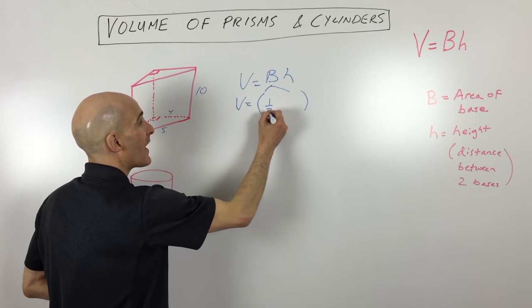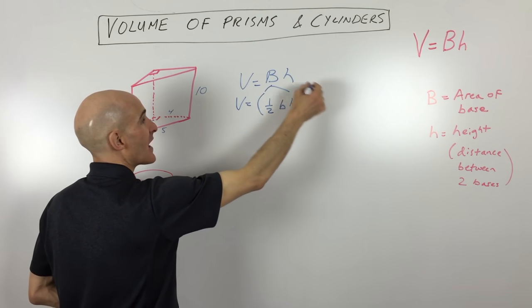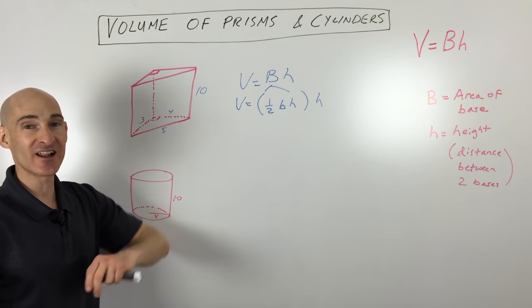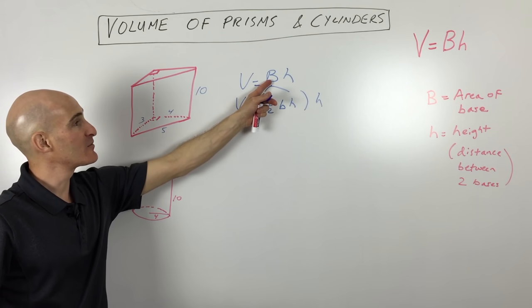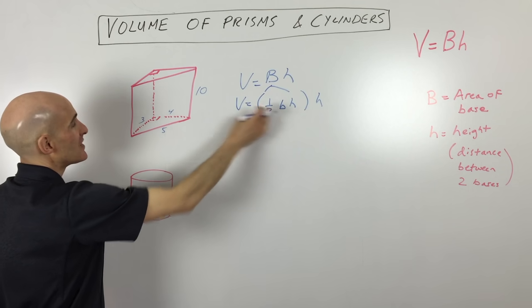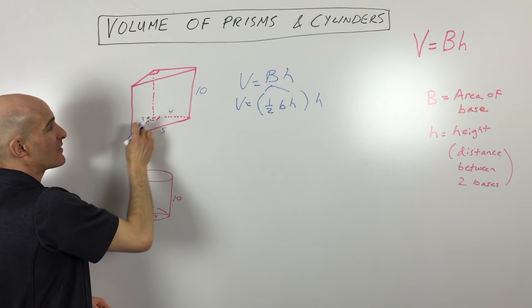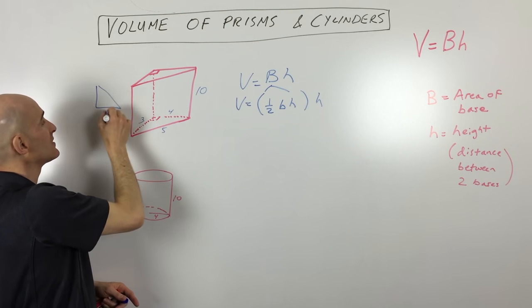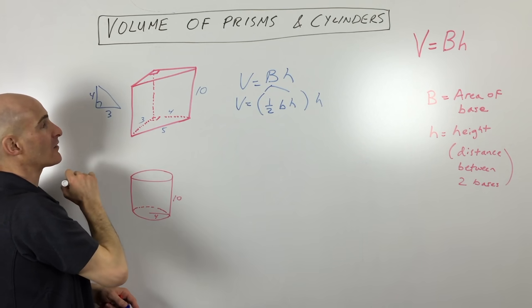It's one-half base times height, times the height again. Let's not get confused - there's a lot of B's and a lot of H's. The capital B means the area of this base, the area of this triangle. The little b means the length of the base. The base here in this triangle is either 3 or 4 - 3 could be the base and 4 could be the height of the triangle, like this. See, 3 and 4.